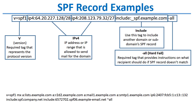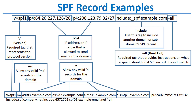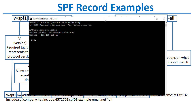A soft fail indicates you should accept the message but treat it as suspicious. Here's another SPF record example: it again begins with the required v=spf1 tag, and includes an MX tag, which indicates that any servers specified in the MX record for the domain should be considered valid senders. It also has four inclusions based on A records, meaning any servers specified in those four A records are also authorized to send mail for the domain.